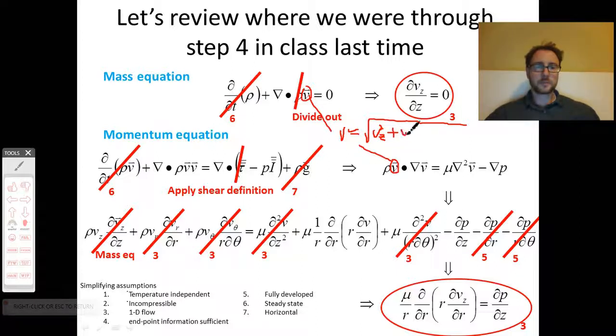But we're saying that Vr is zero and we're saying that Vθ is zero. So obviously the square root of Vz squared then gives us Vz. In our particular case, our simplifying assumptions allow us to say that the overall velocity is just in one dimension.